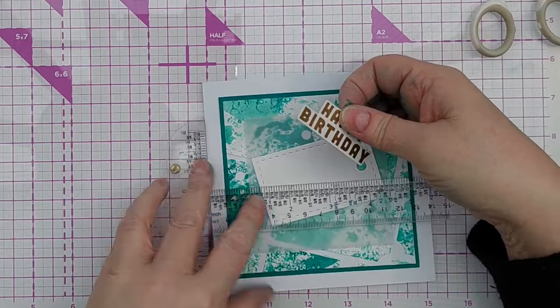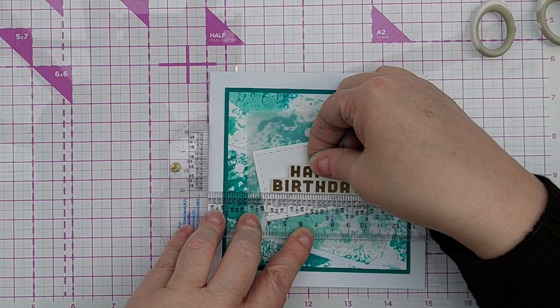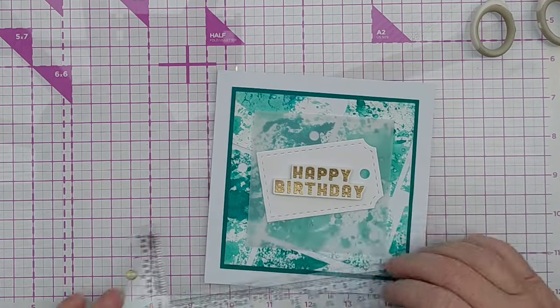I used my T-square ruler to make sure my sentiment was straight and added it on the craft foam to the tag.